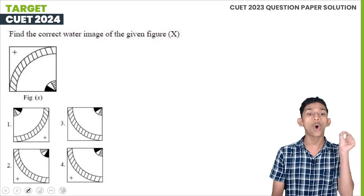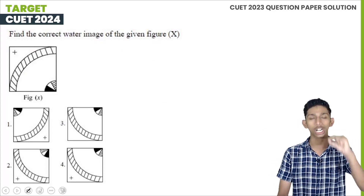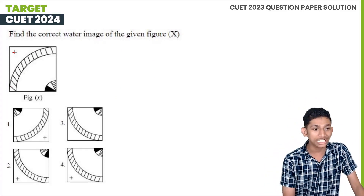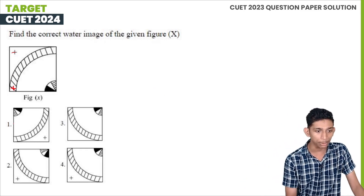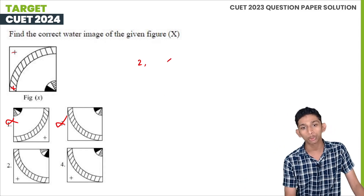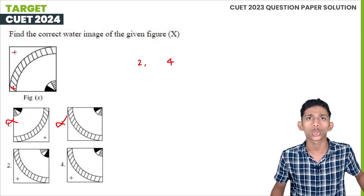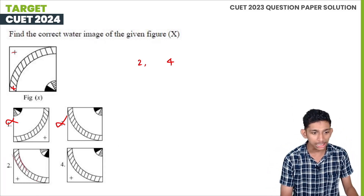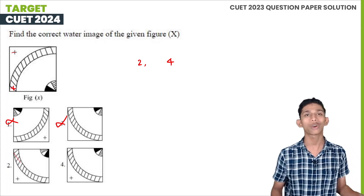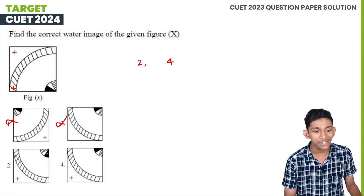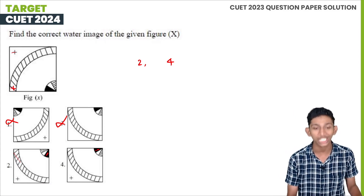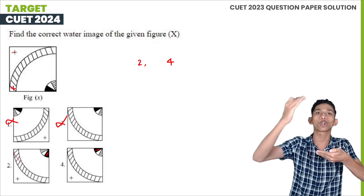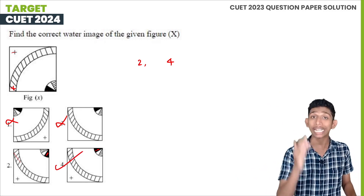Next question: find the correct water image of the given figure. In a water image, the figure is flipped vertically — the top and bottom are swapped. Looking at the options, the fourth option gives the correct water image. The answer is option 4.